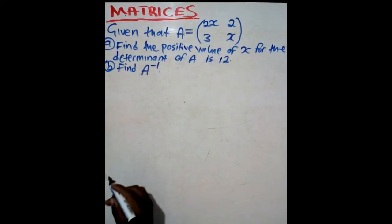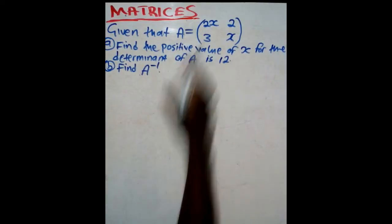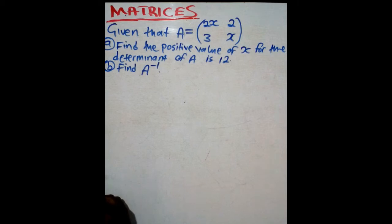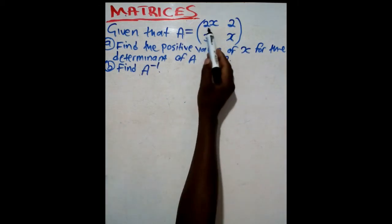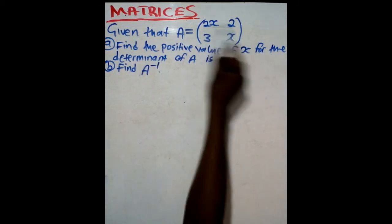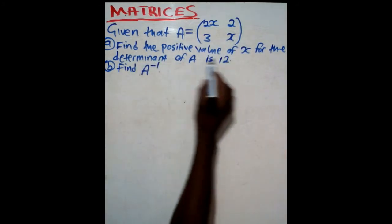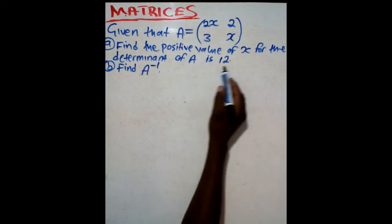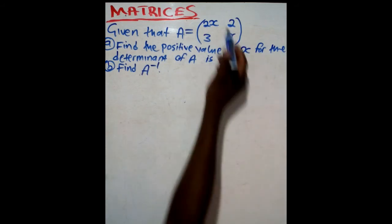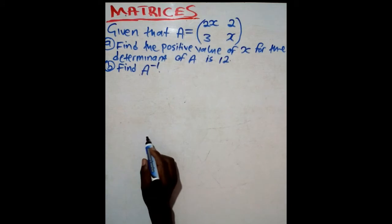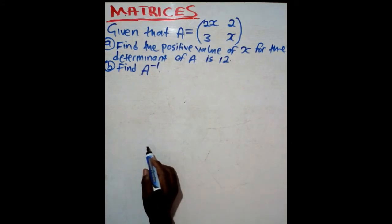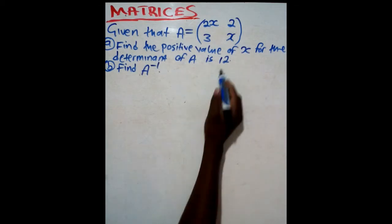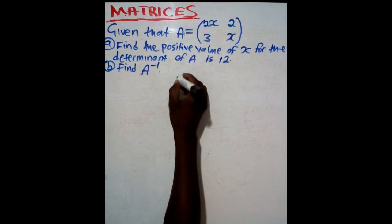On the solving board today, we are provided with a matrix A, which is a 2 by 2 matrix. It has got 2 columns and 2 rows. Find the positive value of X for the determinant of A is 12. So, the determinant of this matrix is 12. We are asked to find the positive value of X when the determinant is actually 12. So, we say: solution.